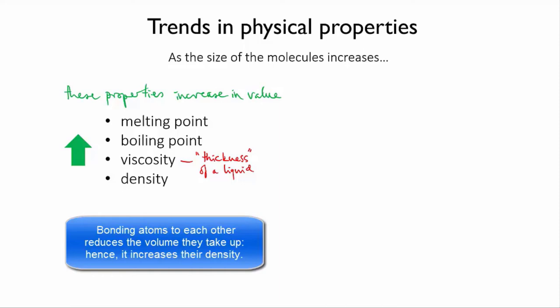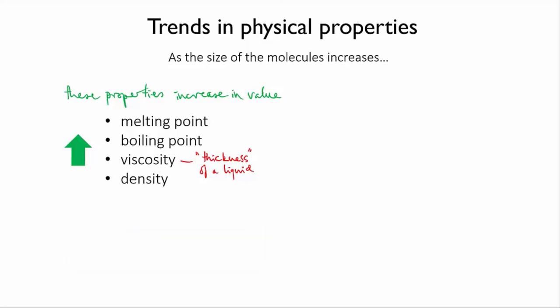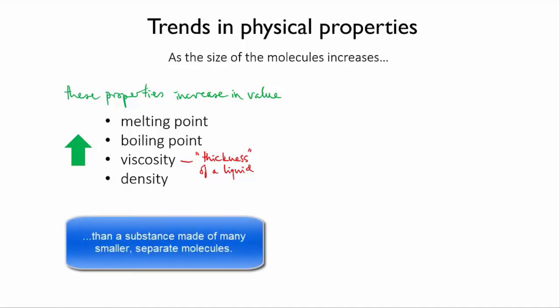Since density is mass over volume, if you can reduce the volume taken up by a certain number of atoms, that will increase their density. So compounds made of large molecules, with many atoms bonded together, will tend to have a higher density.